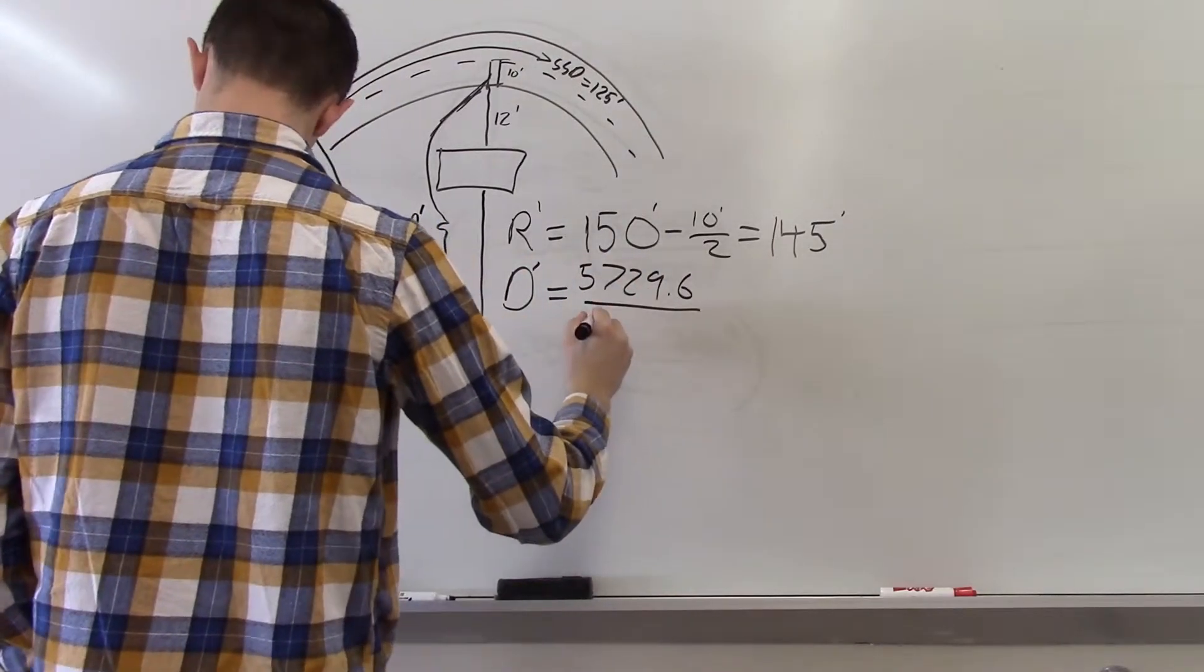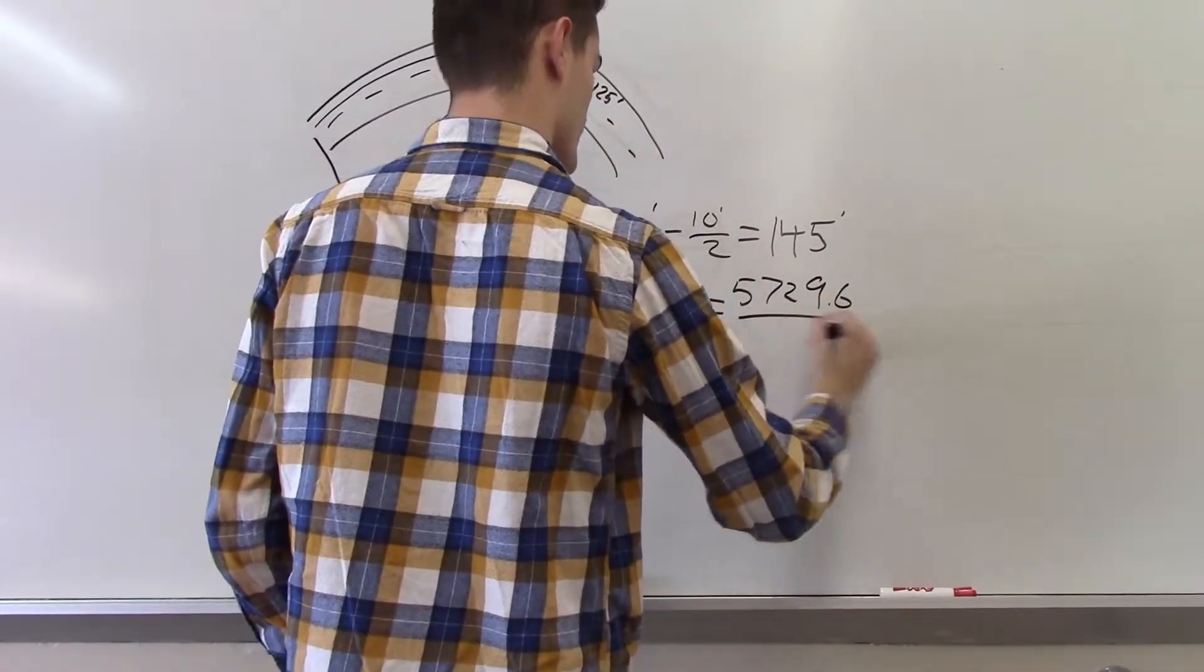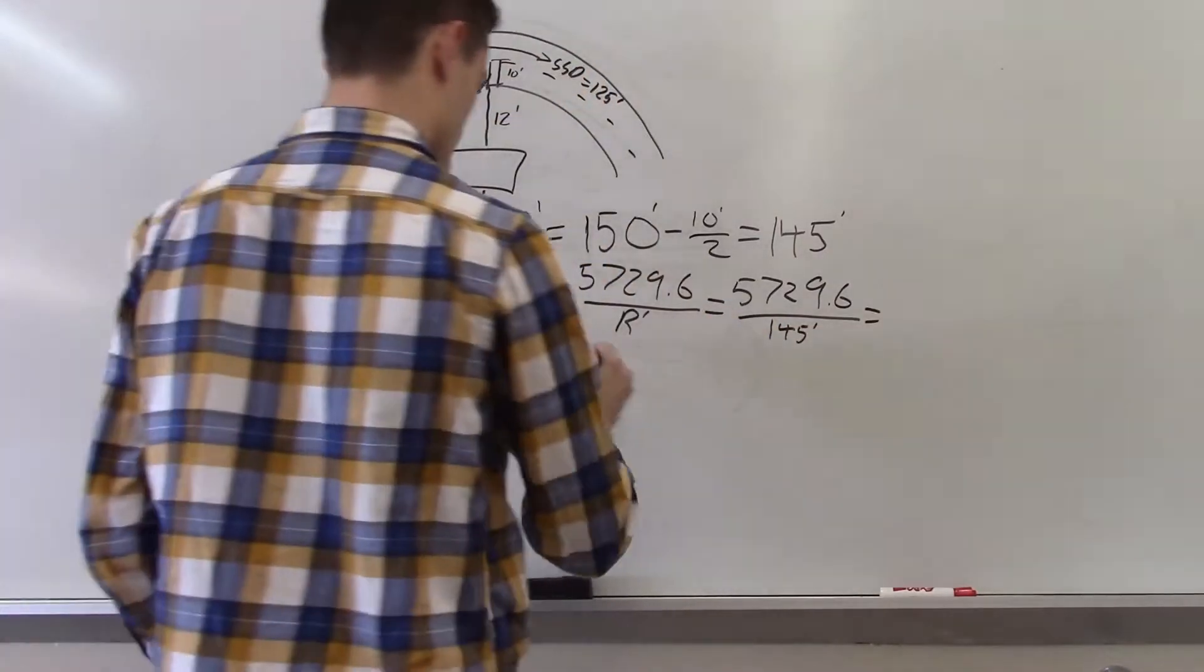With that being said, we can calculate that the radius will be 150 feet minus half of the lane width, which is 5 feet. This gives us a new radius of 145 feet.